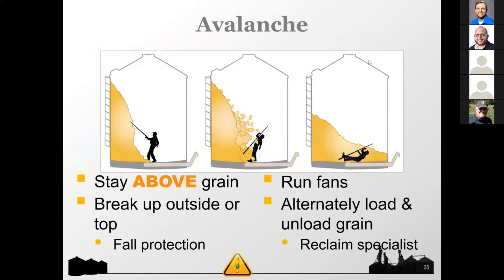The next main hazard is avalanche. You see columns develop, and workers often try to approach from beneath to knock on them and get the grain flowing. It's hard to estimate how much grain mass is in those columns, and once it starts flowing it just completely engulfs them. With avalanche, rescue is much harder than flowing grain — at least with flowing grain you know the victim is most likely in the center. With an avalanche, you have no idea where the victim is. These columns can be up to 60 feet high.